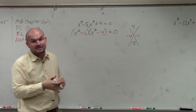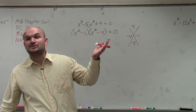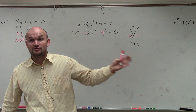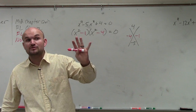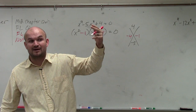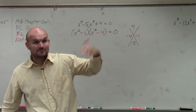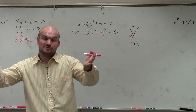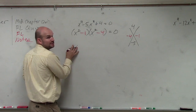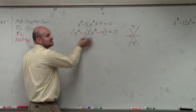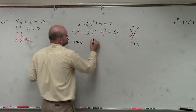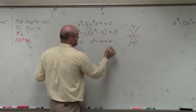Now, a couple of things we need to know about this. If it's raised to the fourth power, how many solutions are we going to have? Four. So we know when we're finding our solutions, we're going to have four solutions. When it was raised to the second power, how many solutions did we have? Two — and that's why we only had those two solutions. But now what you're going to do for your homework tonight is apply the zero product property: x squared minus 1 equals 0, and x squared minus 4 equals 0.